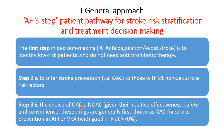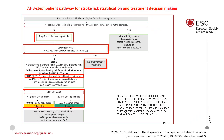The second step is to offer stroke prevention — oral anticoagulants — to those with one or more non-sex stroke risk factors. The third step is the choice of oral anticoagulant, which is preferred to be a NOAC given their relative effectiveness, safety, and convenience. These drugs are generally considered the first choice for stroke prevention, with warfarin or vitamin K antagonist as the second choice when time in therapeutic range is more than 70%.